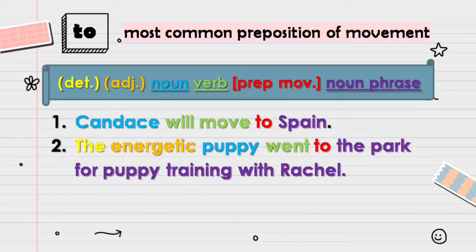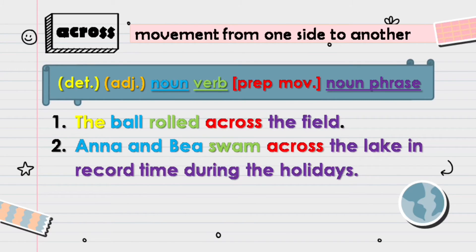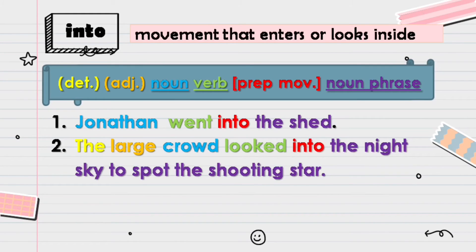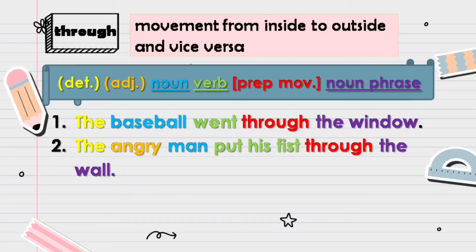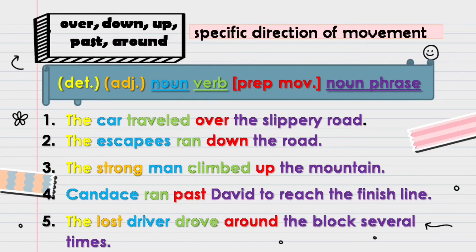An example is the word 'to,' which is the most common preposition of movement. Each part of the syntactic environment is colored for us to easily identify which parts correspond to the examples. As we can see in example one, determiner and adjective are optional. Another example is 'across,' used for movement from one side to another. 'Into' refers to movement that enters or looks inside. 'Through' refers to movement from inside to outside and vice versa. 'Over,' 'down,' 'up,' 'past,' and 'around' refer to a specific direction of movement.